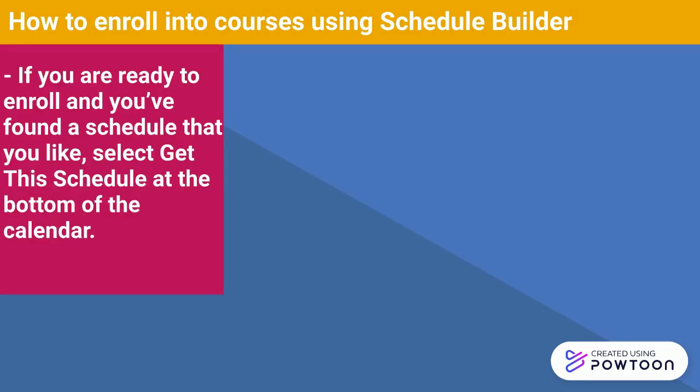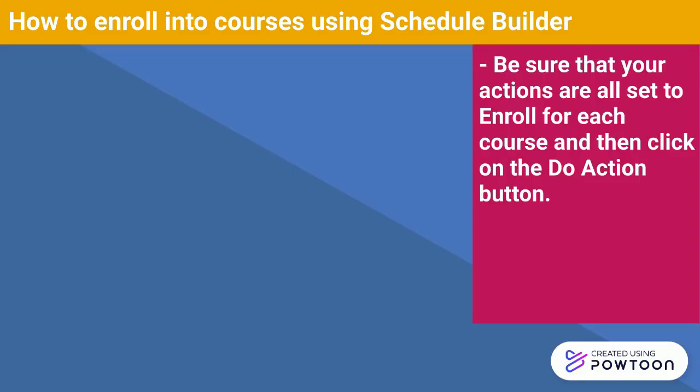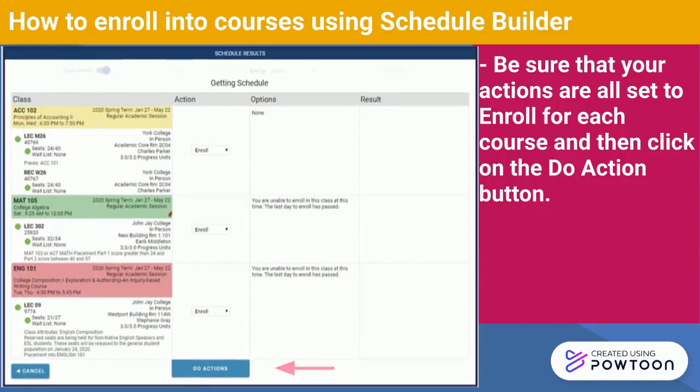If you are ready to enroll and you found a schedule that you like, select to get this schedule at the bottom of the calendar. Be sure that your actions are all set to enroll for each course and then click on the Do Action button.